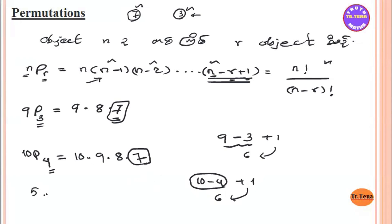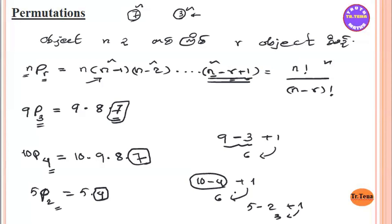Now for 5P2: the last term is N minus R plus 1. N is 5, R is 2, so 5 minus 2 plus 1 equals 4. The terms are 5, 4. So N, N-1, N-2, and so on up to N-R plus 1.